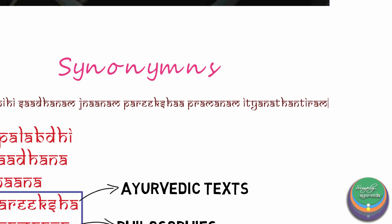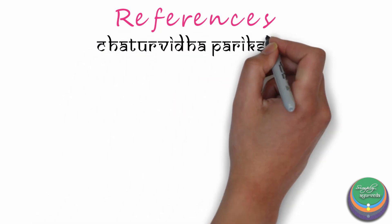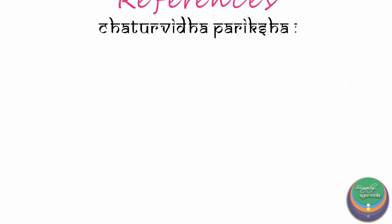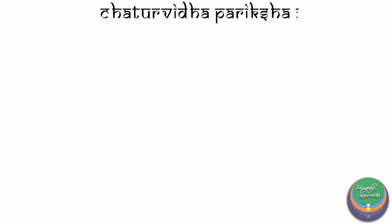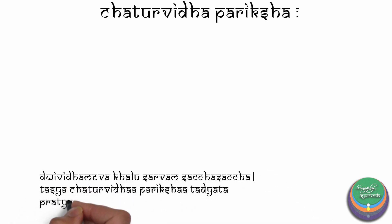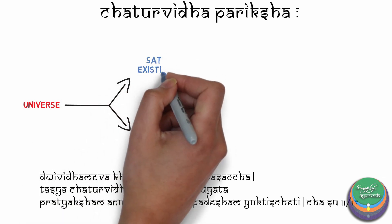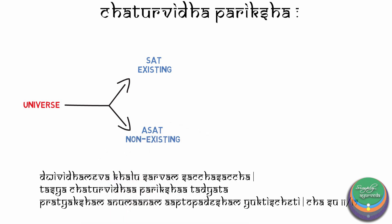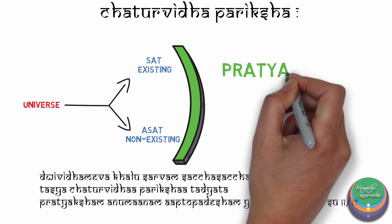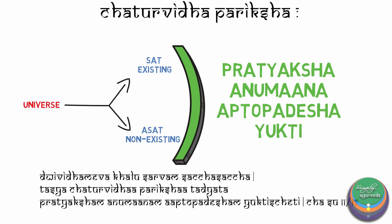Let us briefly look into where Pariksha or Pramana is mentioned in Ayurveda and why they are necessary for a clinical science like Ayurveda. In Charaka Samhita, a four-tier examination is explained in the context of proving the concept of rebirth. The whole universe can be classified as Sat, or Existing, and Asat, or Non-Existing. To analyze these, Chaturvidha Pariksha is mentioned. They are Pratyaksha or Direct Perception, Anumana or Inference, Aptopadesha or Authentic Scriptures, and Yukti or Rational Application.